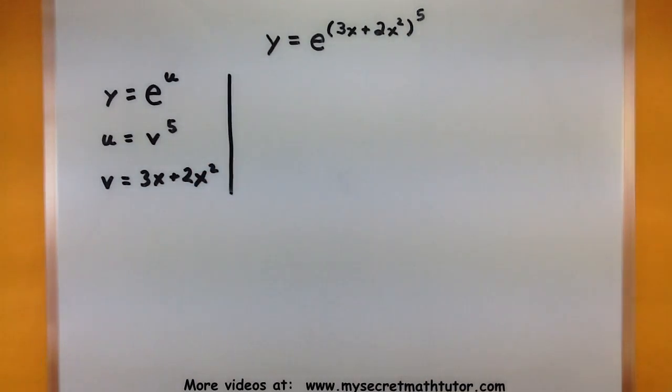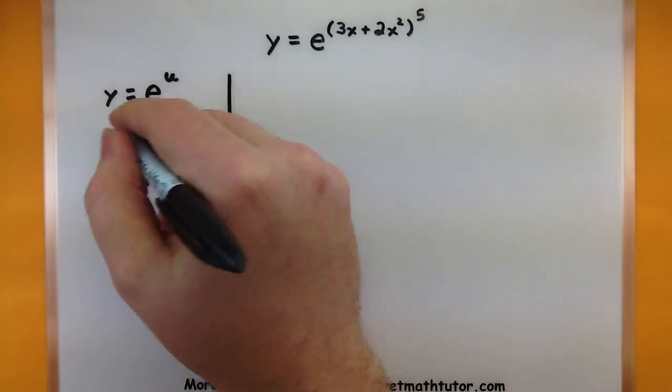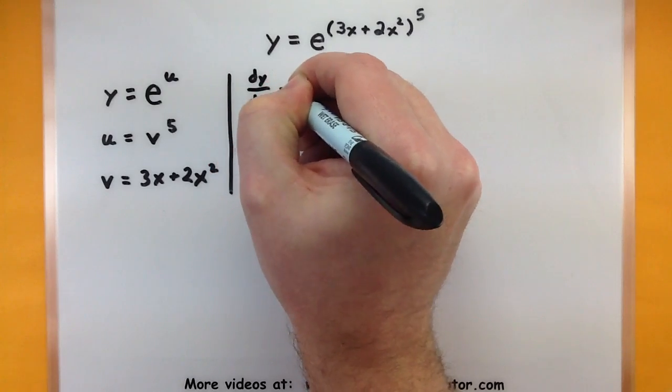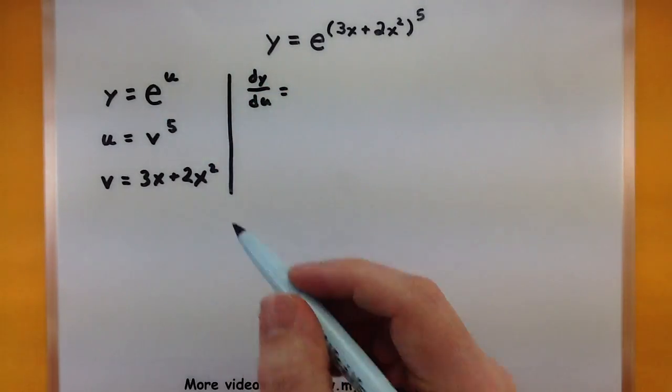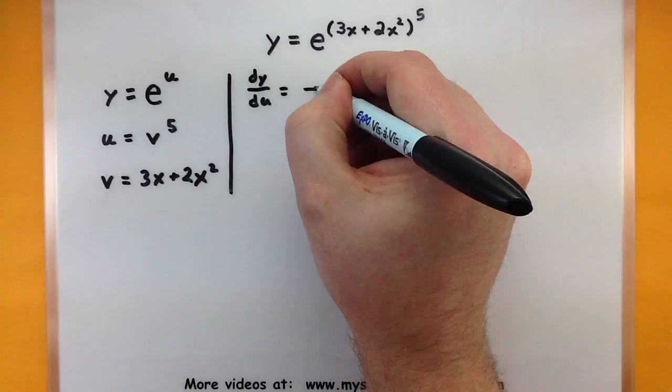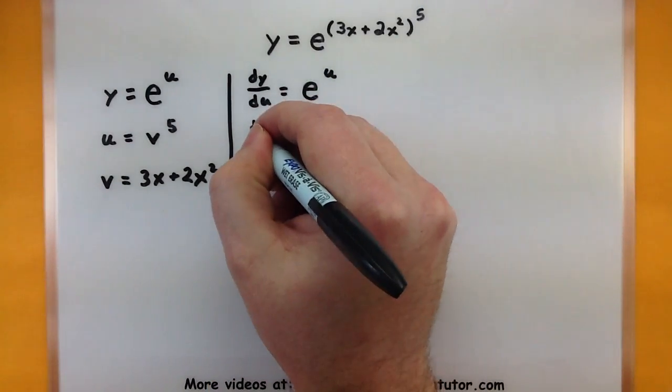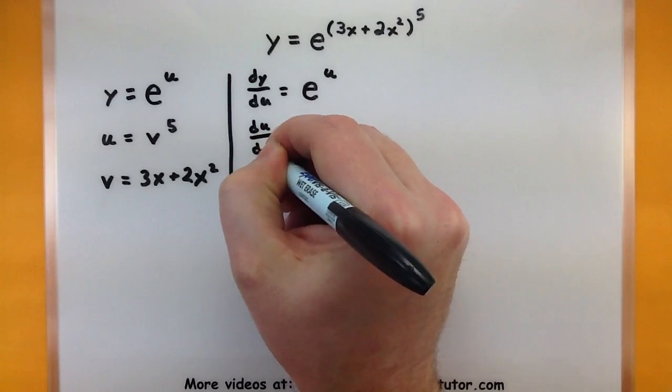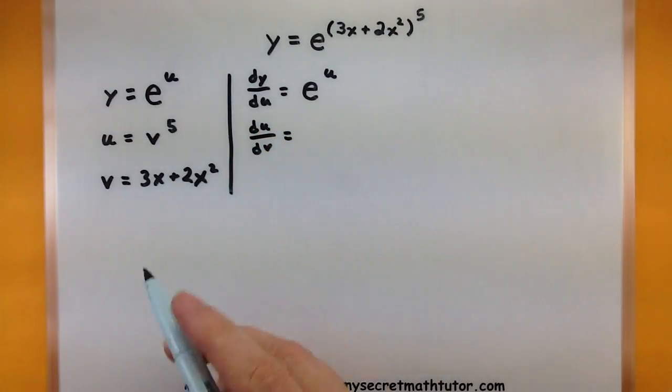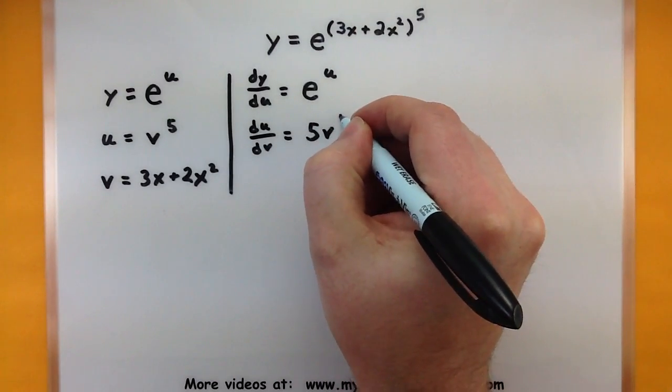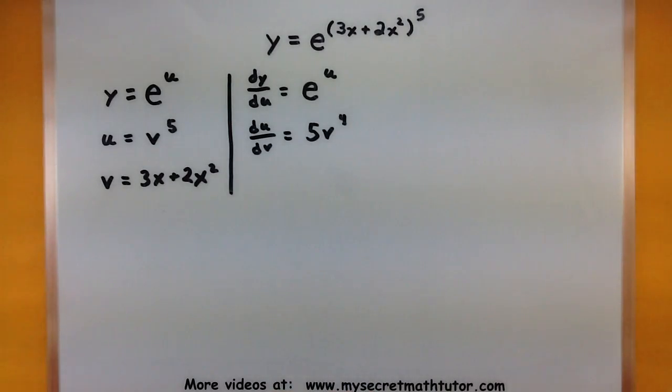So now that we've rewritten it using these new variables, let's take the derivative of each of these. We'll take the derivative of the first one. Here's our dy du. What is the derivative with respect to u? Well, taking the derivative of e to the u is a really nice one, exactly the same, e to the u. Alright, now on to the derivative of u with respect to v. So here's a nice power, we just bring down the power, reduce by one, 5v to the fourth. Very nice.